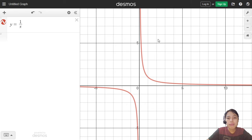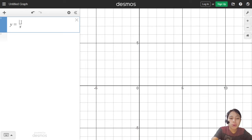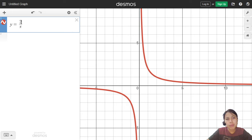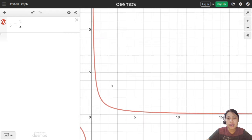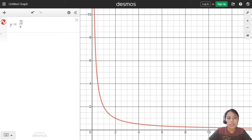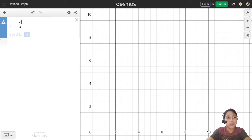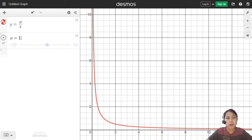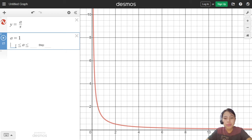So what happens if I do 2 over x? It's a bit hard to see the difference. Let's focus more on this side, or just on one side of the graph. So I'm going to change the numerator to some constant a that ranges from 0 to 10.